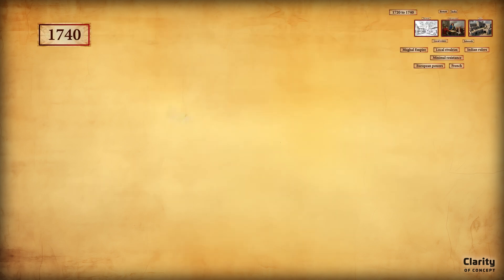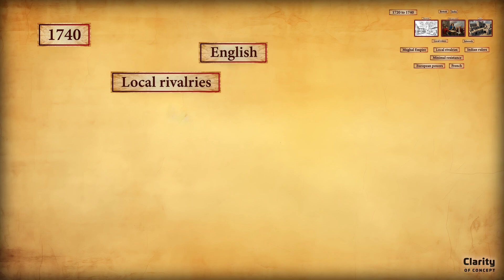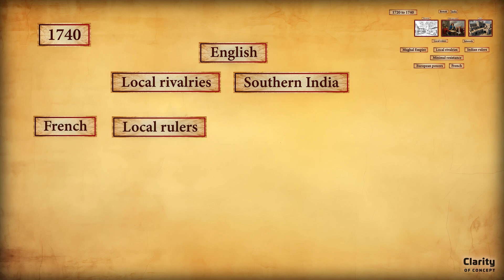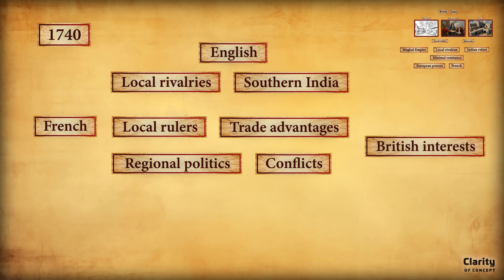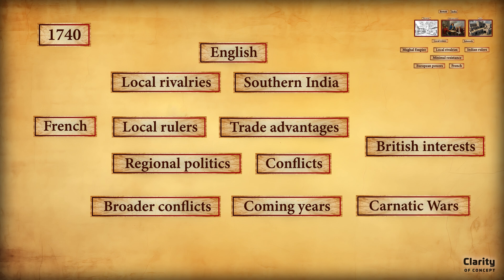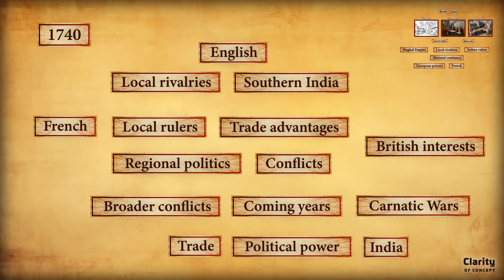Around 1740, the English found it necessary to interfere in local rivalries, especially in southern India, as the French had started supporting local rulers against their rivals to gain trade advantages. This French involvement in regional politics posed a direct threat to growing British interests. The competition between the two European powers set the stage for broader conflicts known as the Carnatic Wars, which would play a crucial role in determining who would dominate trade and political power in India.